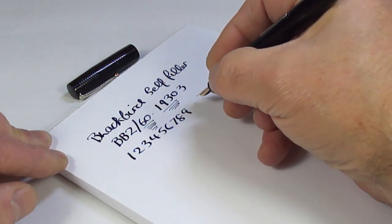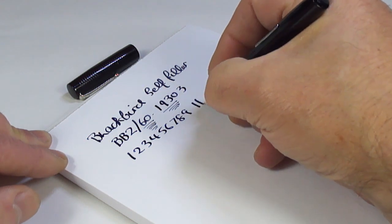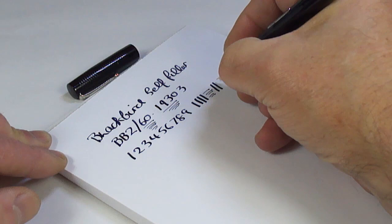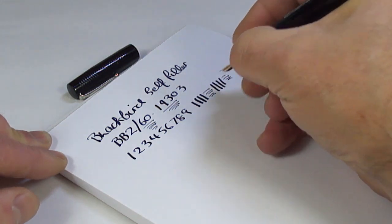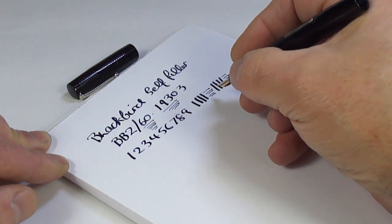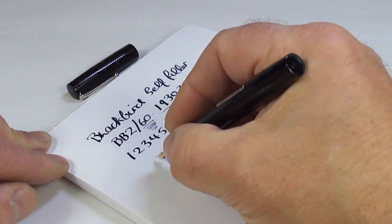It's writing absolutely lovely, lovely and smooth. And there you go, look at that. A whopping big broad line on the downward stroke, fine line on the cross stroke.